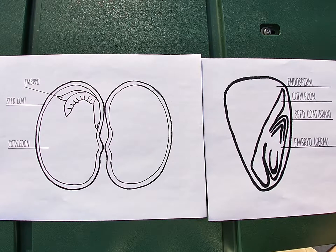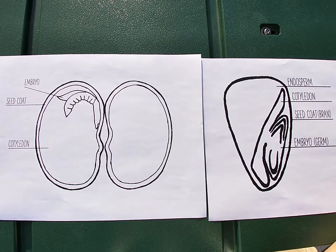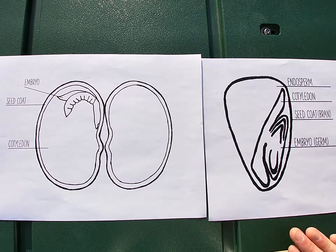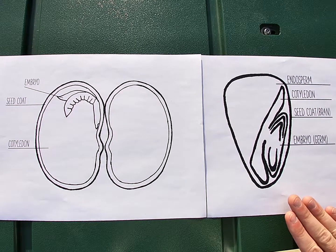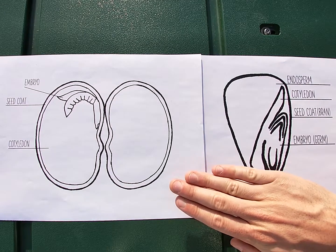Let's jump in and look at the parts of a seed. When we start looking at the parts of a seed, we need to know that seeds fall into two main categories. The first is called a monocot, and the second is a dicot.